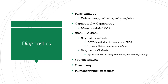Blood gases are a more accurate measurement of gas levels and acid-base balance, but are invasive. Allen's test should be performed prior to puncturing the radial artery to ensure blood flow to the hand. Pressure is held for several minutes after the arterial puncture to avoid bleeding. Respiratory acidosis is the most common acid-base imbalance from the respiratory system — seen in COPD, as a late finding in pneumonia, and with ARDS — caused primarily by hypoventilation and respiratory failure. Respiratory alkalosis is caused primarily by hyperventilation, seen with early asthma or pneumonia and with anxiety.